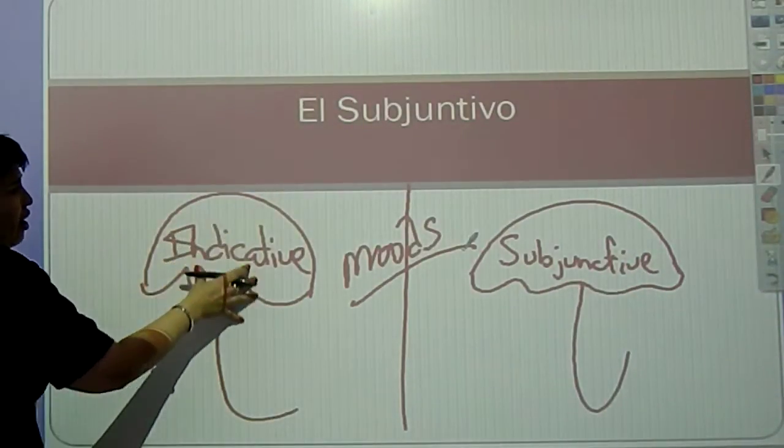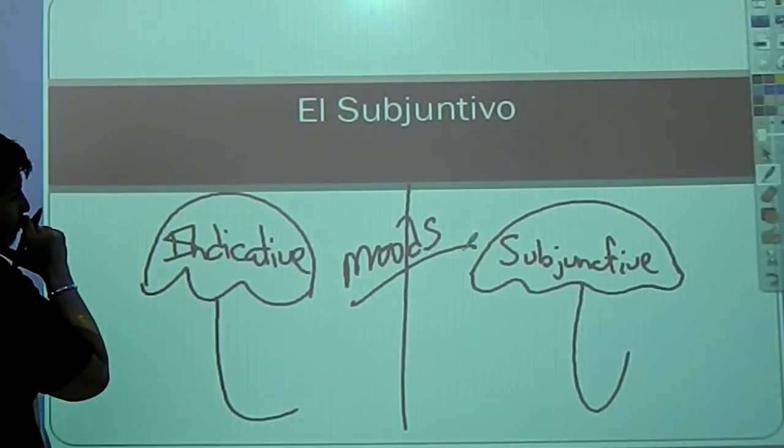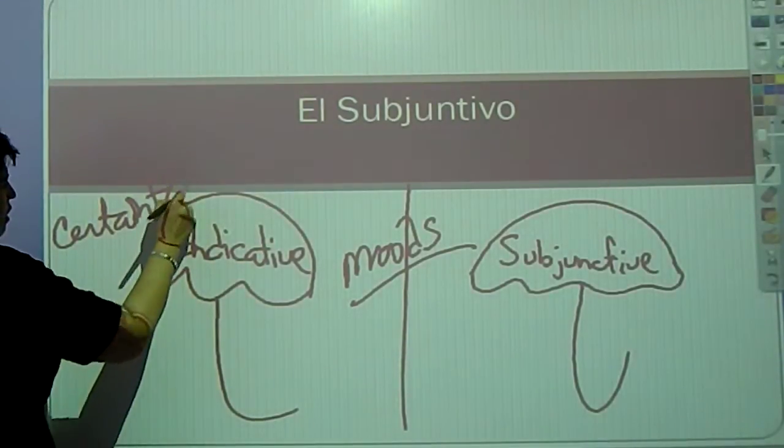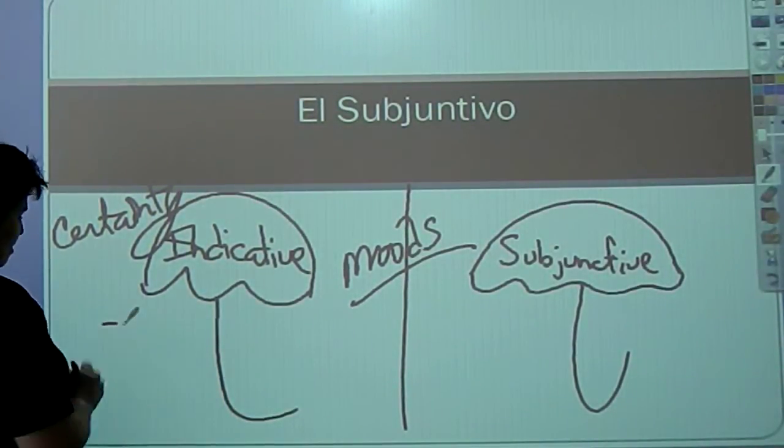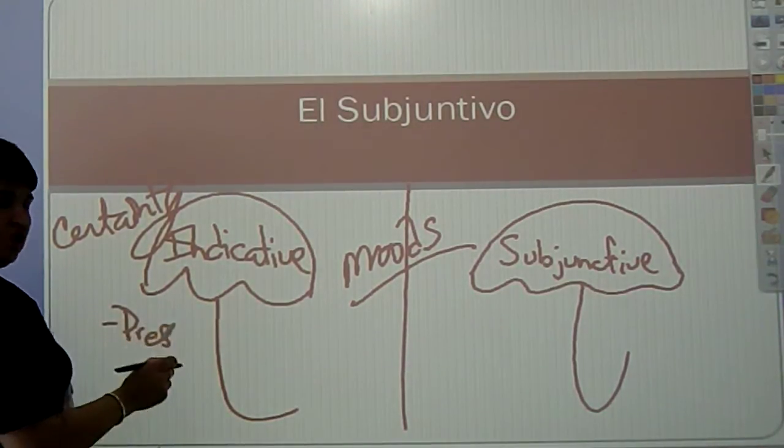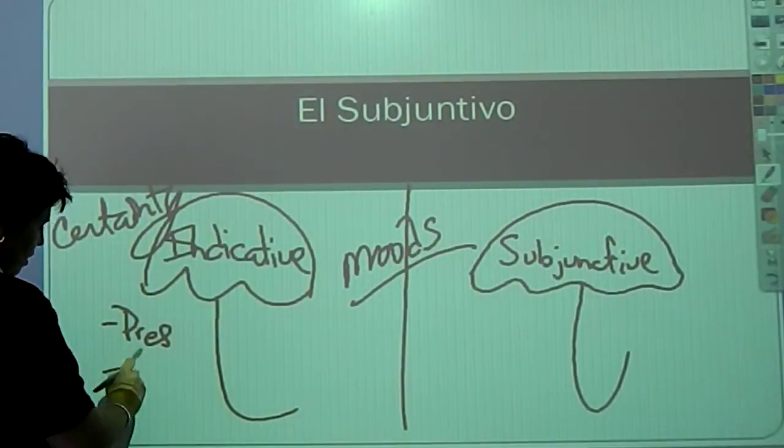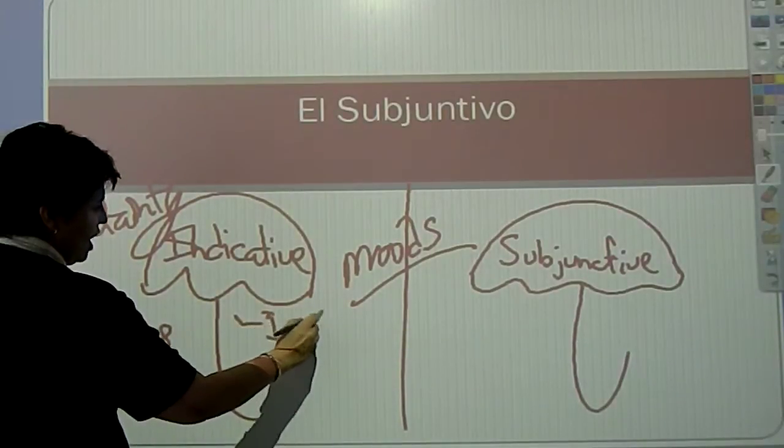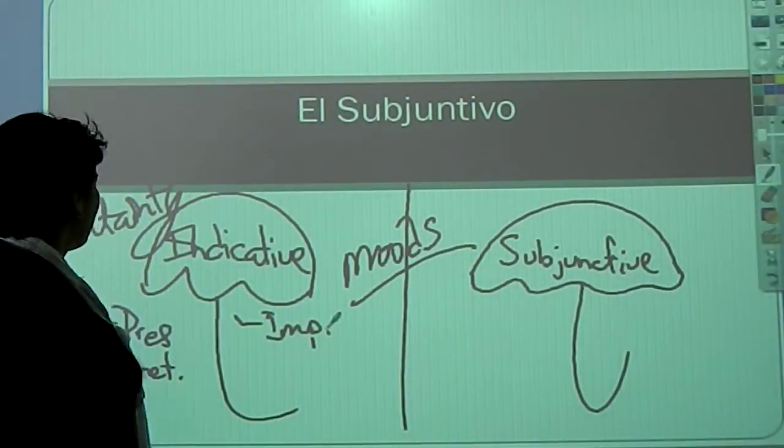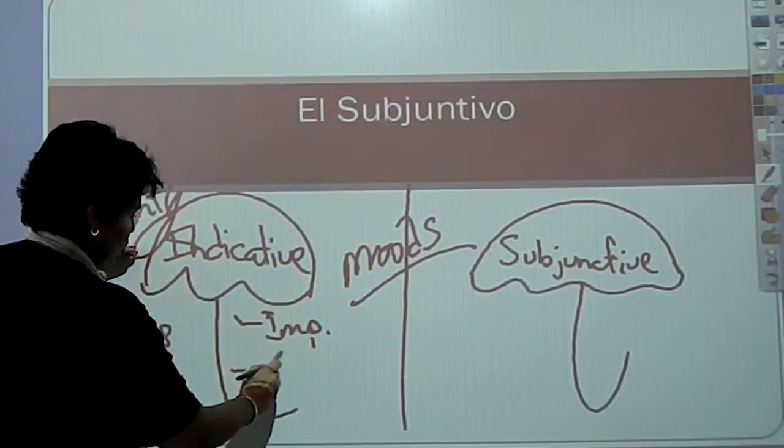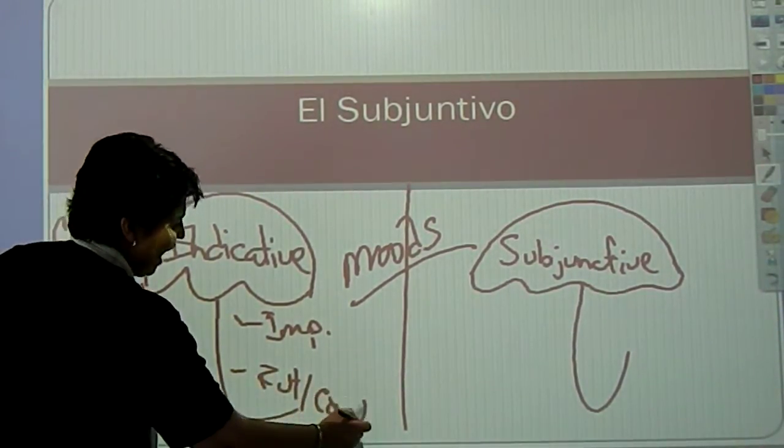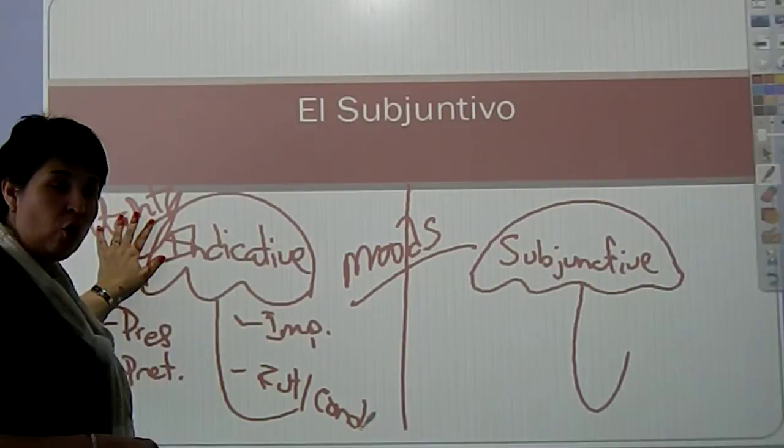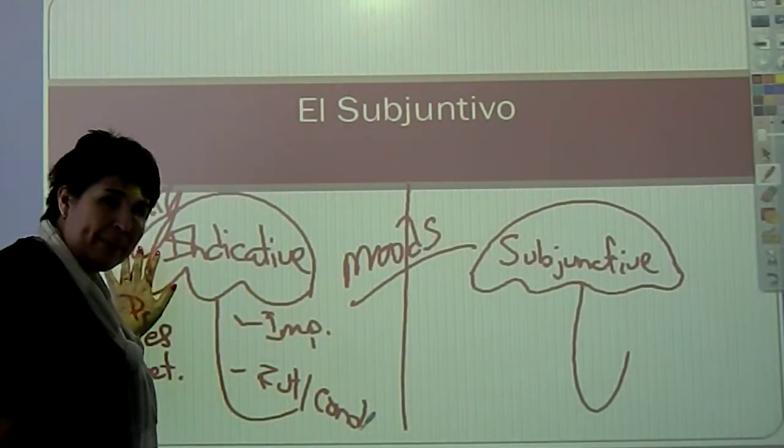Everything that falls under the indicative umbrella implies certainty. Present tense, it is happening. There's no doubt in my mind that it is happening. Preterite, it happened. Imperfect, it was happening. Again, no doubt in my mind. There's certainty there. Future and conditional. Again, no doubt in my mind that this has happened or is going to happen or will happen. No doubt.